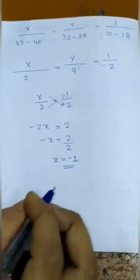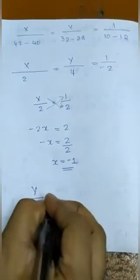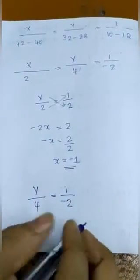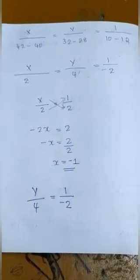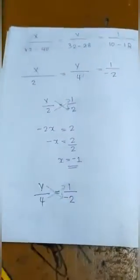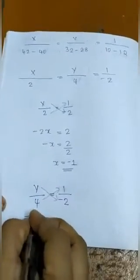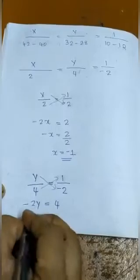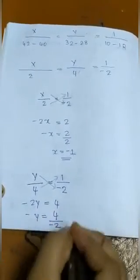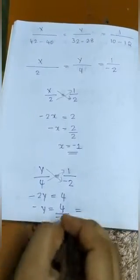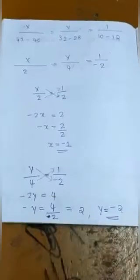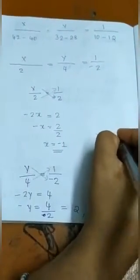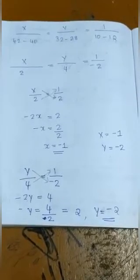Next, find the solution for the variable y. Equate the second and third expressions: y over 4 = 1 over −2. Cross multiply: −2y = 4, so y = 4 ÷ (−2) = −2. Therefore y = −2. So x = −1 and y = −2 is the solution for the given pair of linear equations.